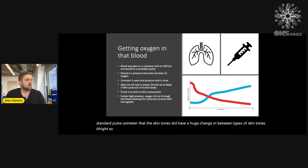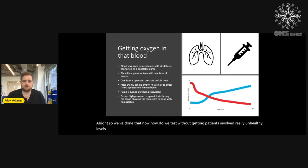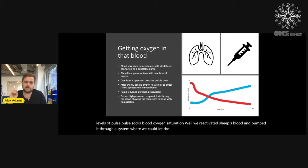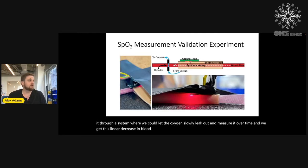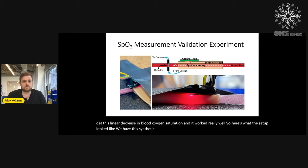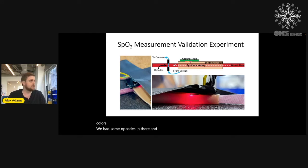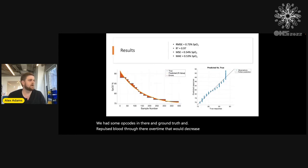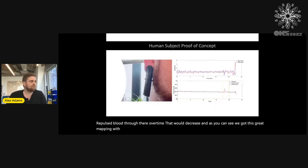To test without getting patients involved at really unhealthy levels of blood oxygen saturation, we re-oxygenated sheep's blood and pumped it through a system where we could let the oxygen slowly leak out and measure it over time. We get this linear decrease in blood oxygen saturation and it worked really well. The setup included a synthetic artery and synthetic flesh, with different colors of skin, optodes, and a ground truth. We pulsed blood through there over time as it would decrease, and we got a great mapping with the regression. We also tested on human subjects and confirmed we get signal.